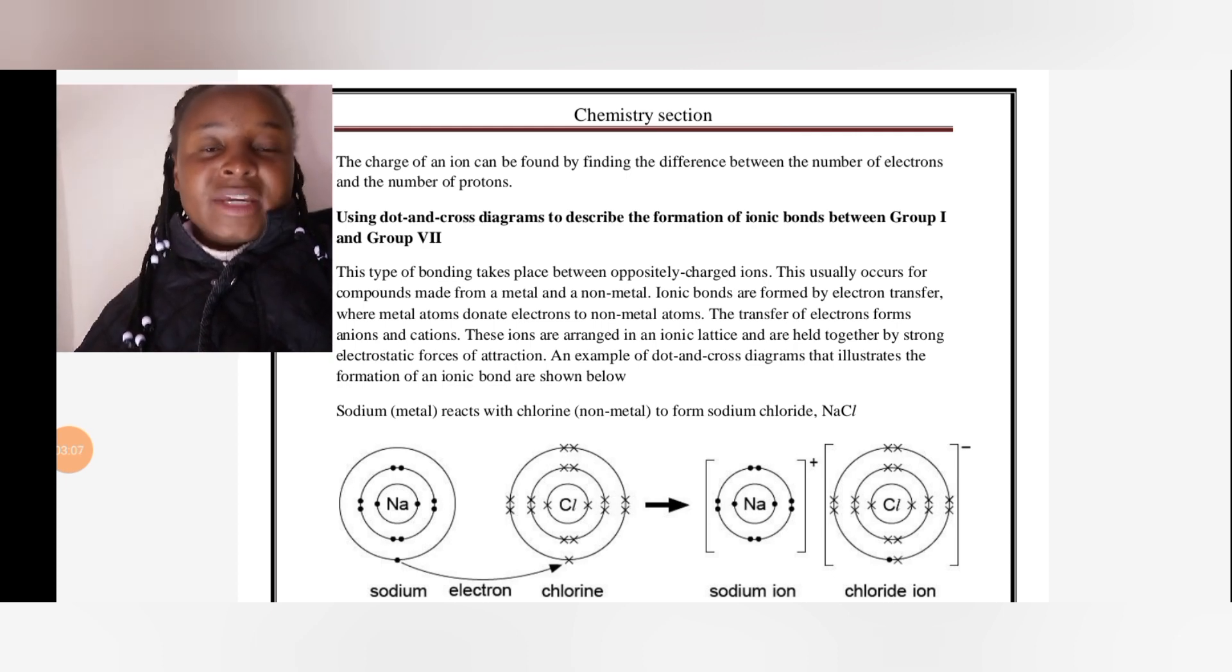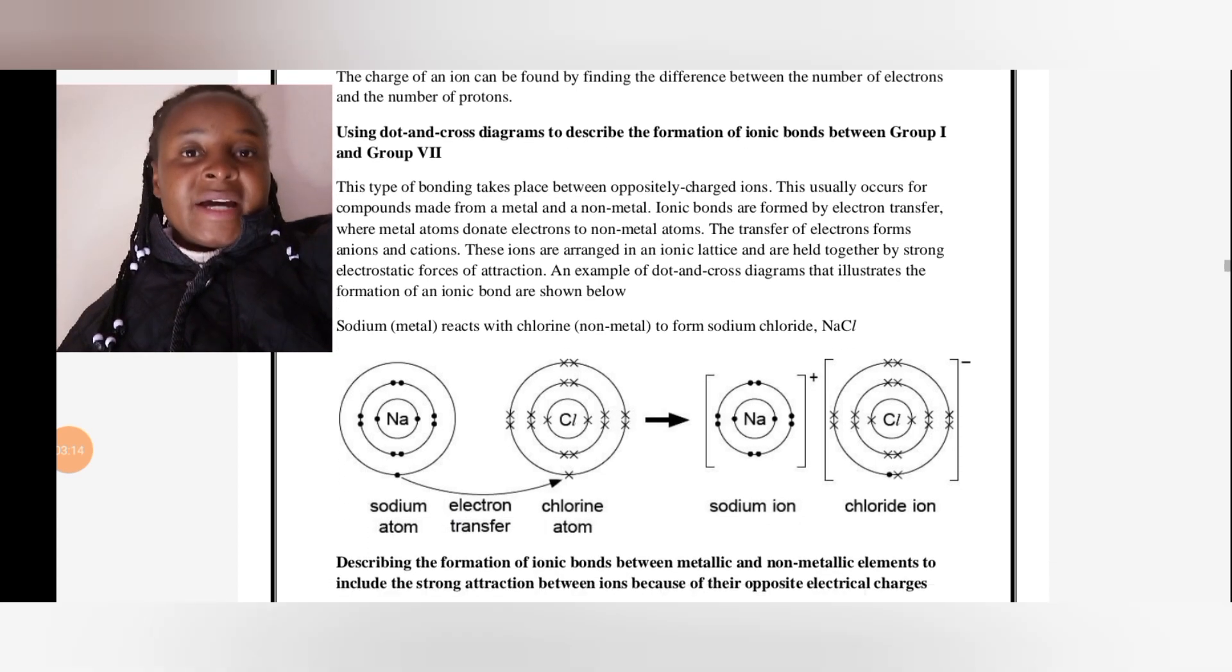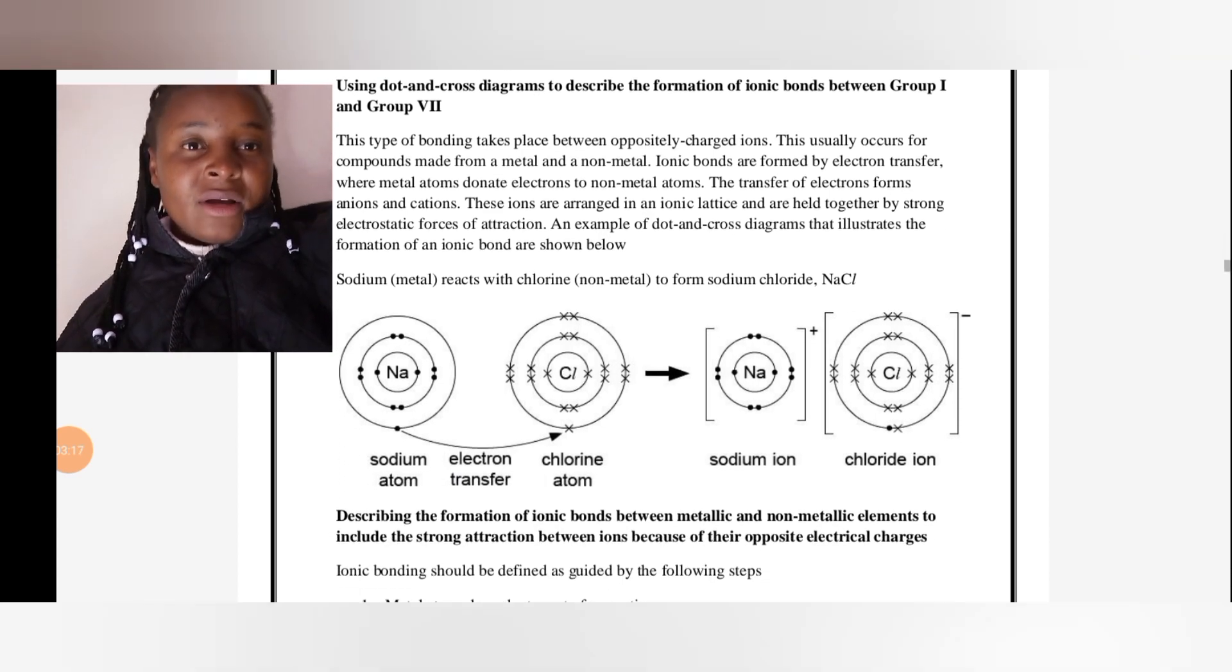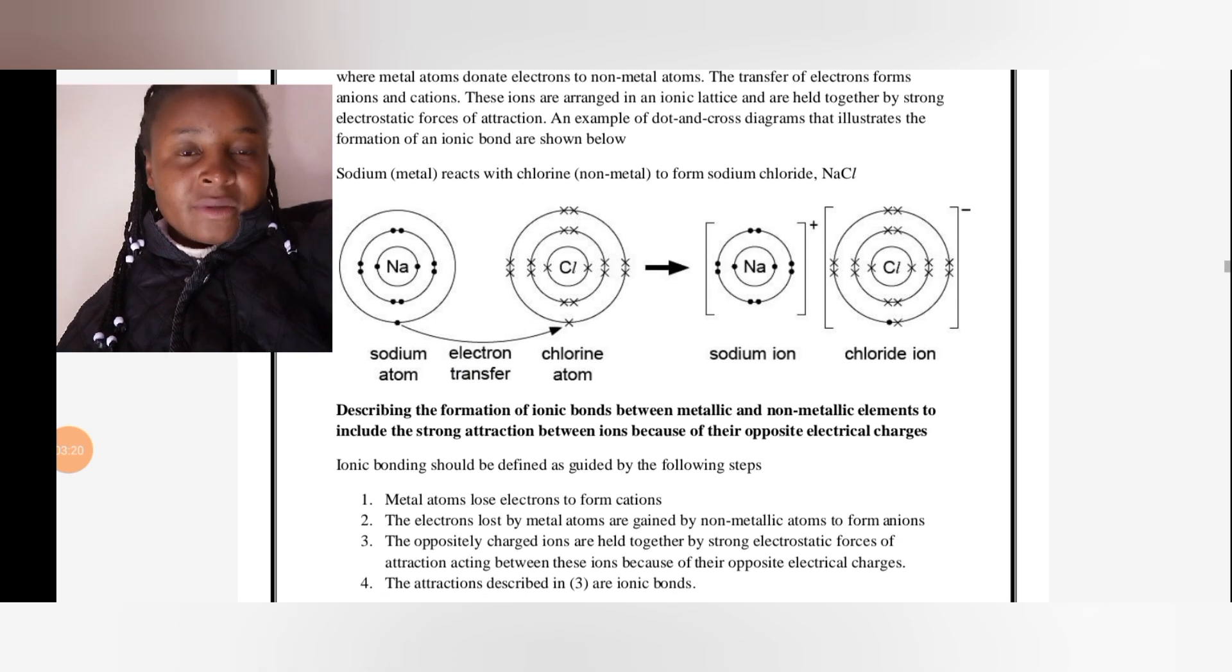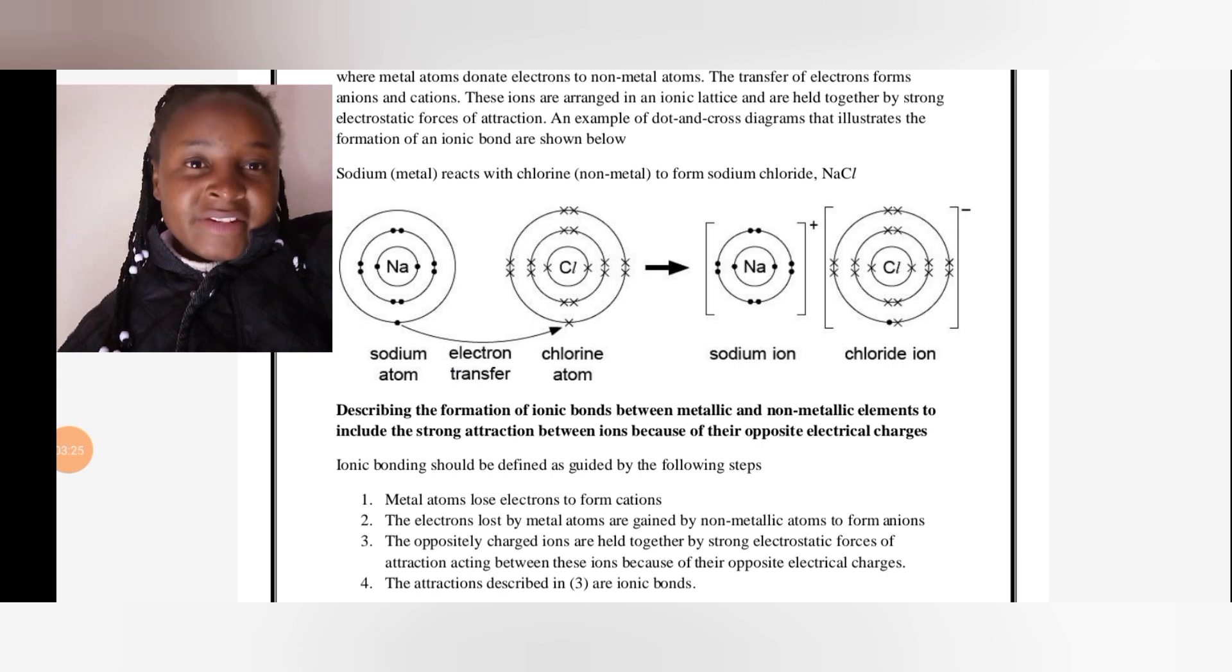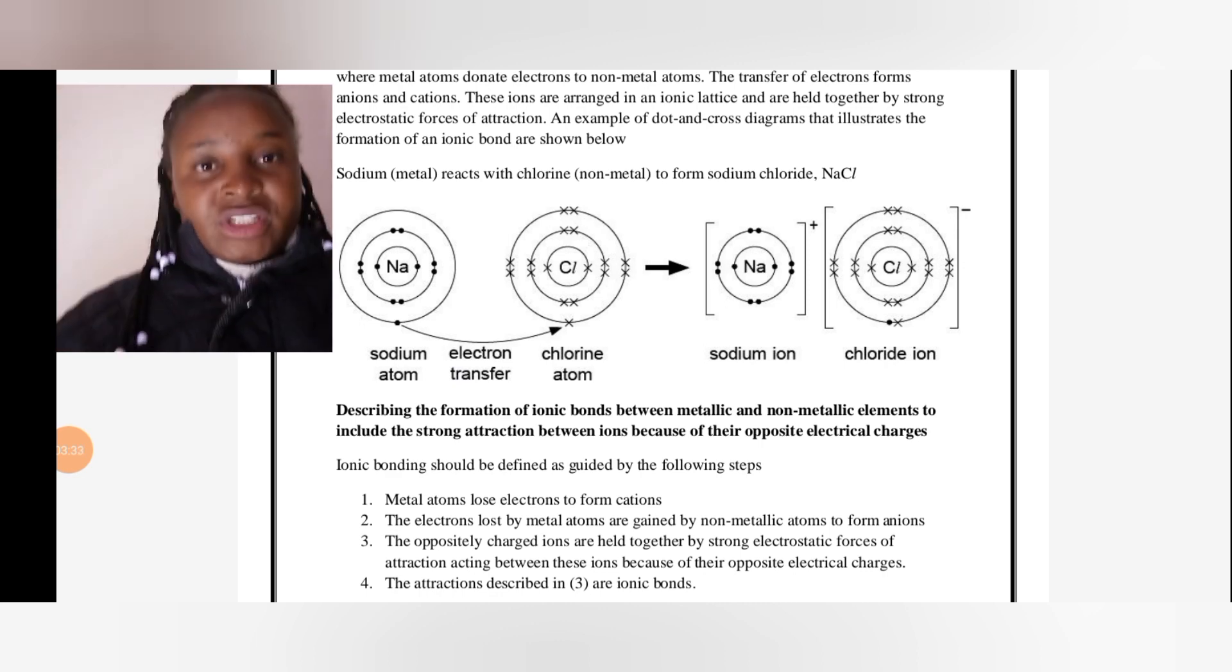An example of a dot and cross diagram: we are reacting sodium metal with chlorine gas to form sodium chloride. Sodium has 11 electrons with one electron in the outer shell. Every electron is fighting to have a full octet shell. Sodium donates its one electron to chlorine. Chlorine has seven electrons in the outer shell; it only needs one to have eight.